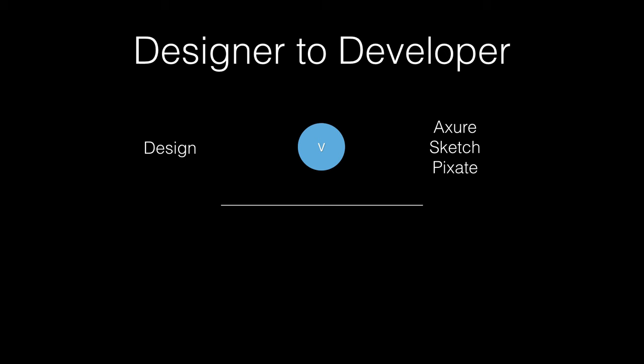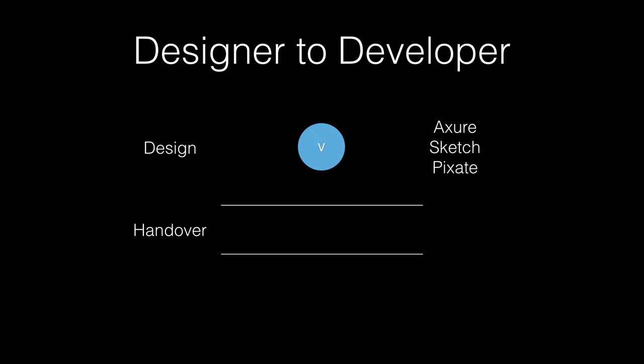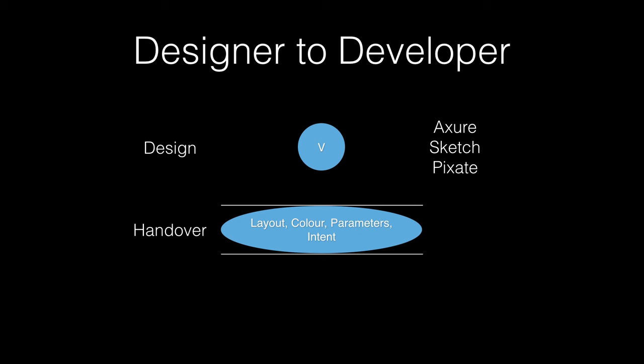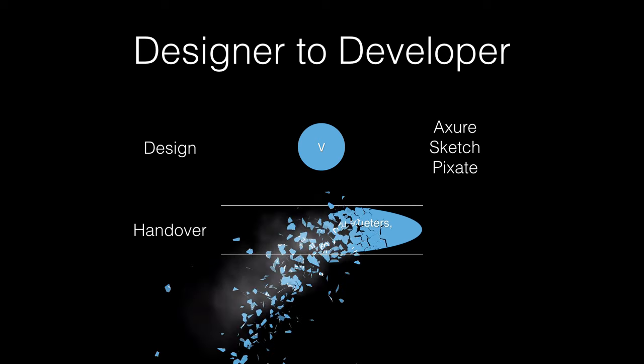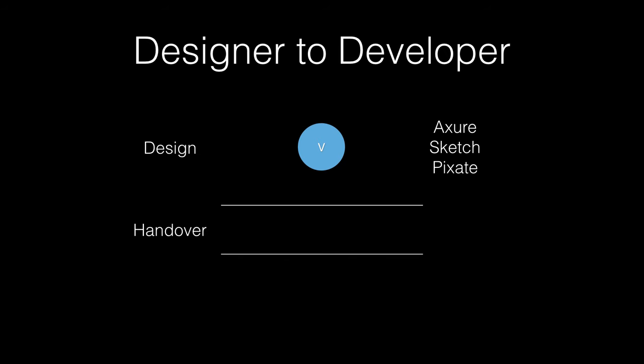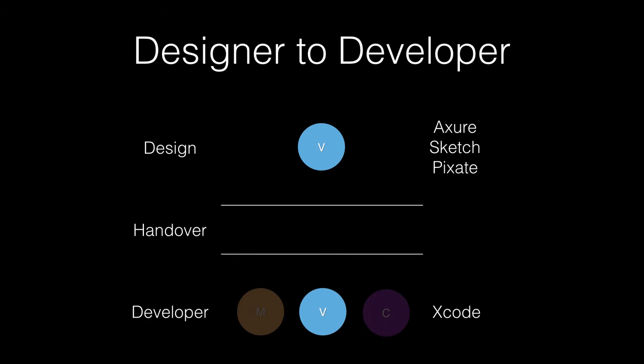It normally goes something like this: the designer will use something like Axure or Sketch or Pixate to build their prototypes, and they'll hand that over. It comes to the handover period, developers are ready, and we completely destroy what they've done — it's completely wasted. All that we get out of it is we disassemble those bits, look at all the colours and the intent and the markup, try and figure out what they wanted to stretch, and then we recreate the whole thing and stick it in our Xcode project.